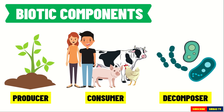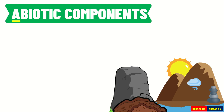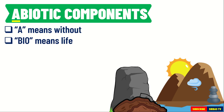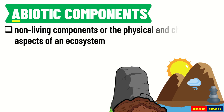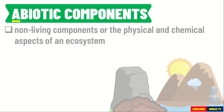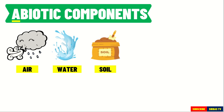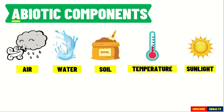Let us now talk about the abiotic components of an ecosystem. The word 'a' in the word abiotic means without, and the word 'bio' means life. Therefore, abiotic means without life. The abiotic components are the non-living components, or the physical and chemical aspects of an ecosystem. Examples of abiotic components include air, water, soil, temperature, and sunlight.